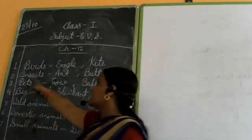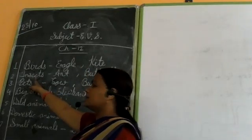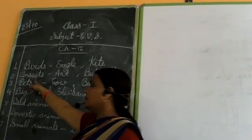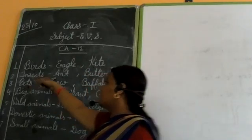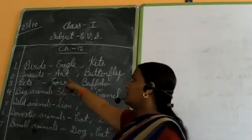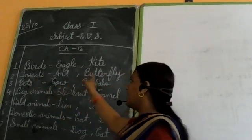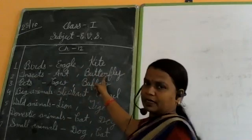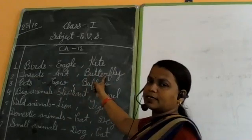Eagle and kite — this is birds. Next is insects. And butterfly. This is insects.